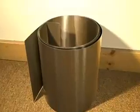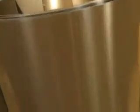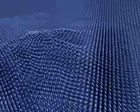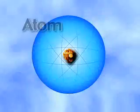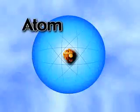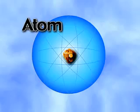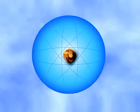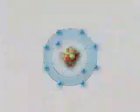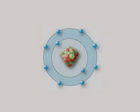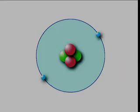Dalton concluded that pure substances called elements are made of extremely small particles called atoms. He stated that atoms of the same element are exactly alike, and the atoms of different elements are different from one another.